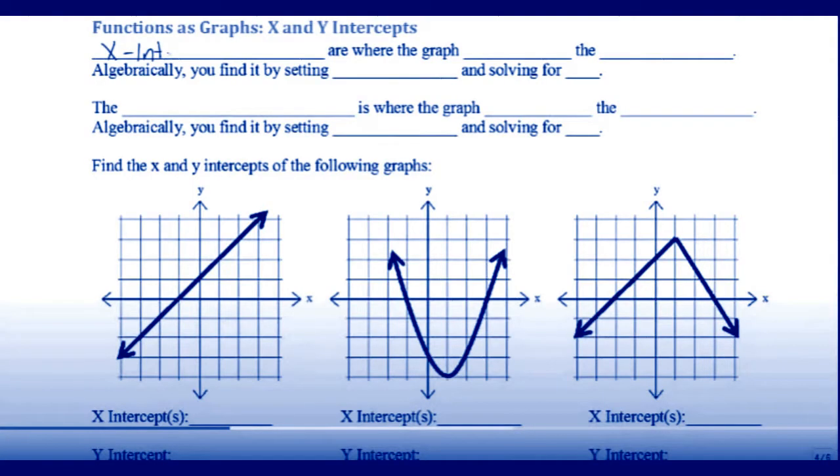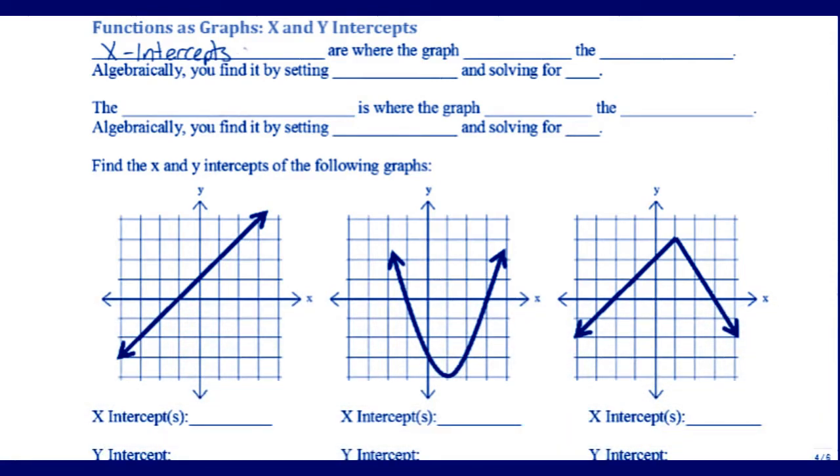We would like to graph using x and y intercepts. X-intercepts are where the graph crosses the x-axis. Algebraically, you find the x-intercept by setting y equal to zero and solving for x.